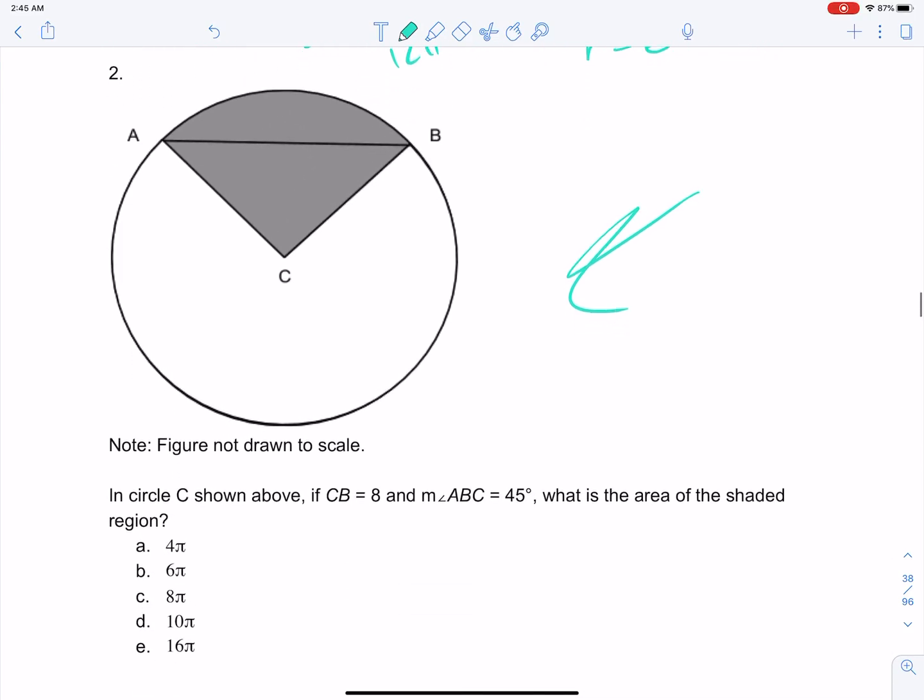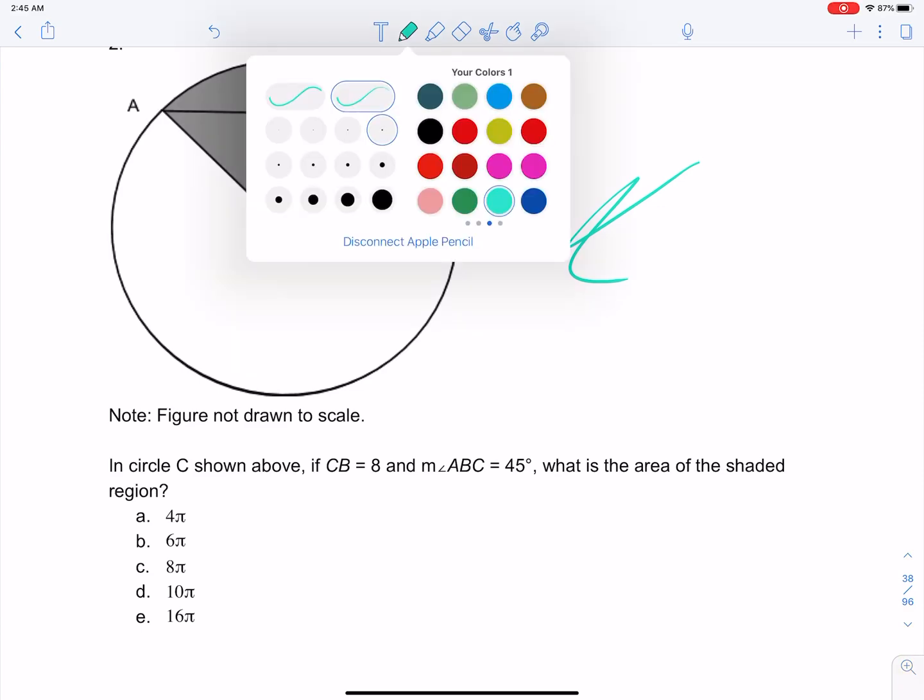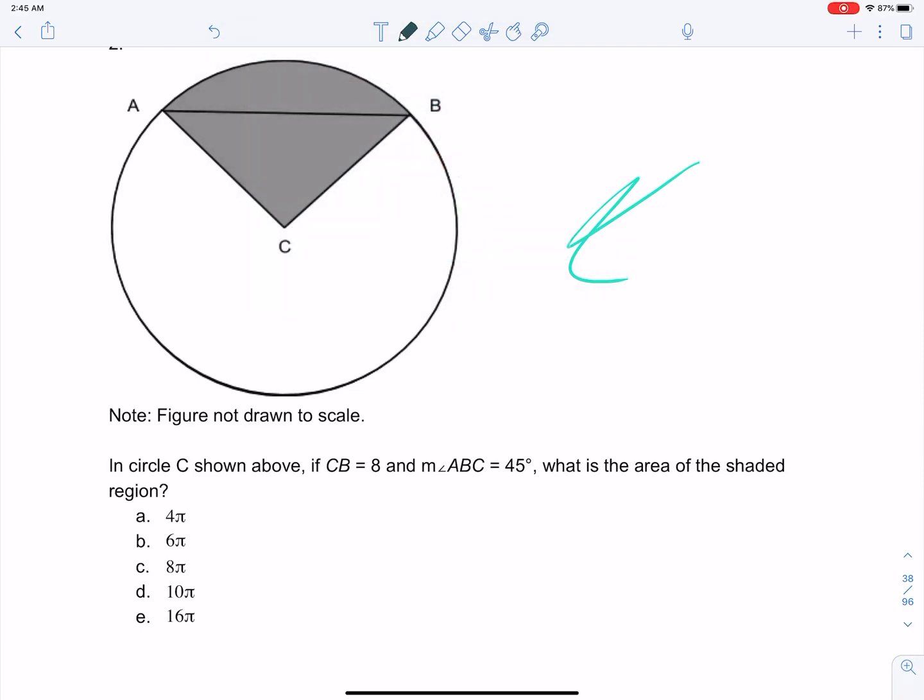But now, let's get into something a little bit more tough, now that we know how to move from area to circumference. So here, in circle C shown above, if CB is 8, okay, so this is 8.